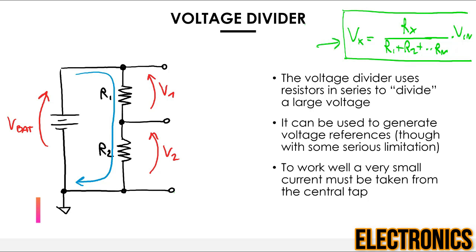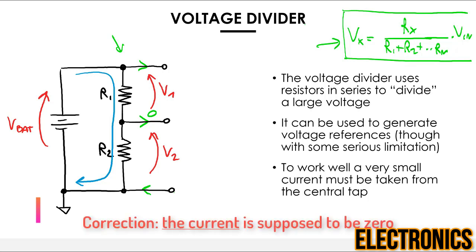I want to revisit an important unspoken assumption in the voltage divider equation: r1 and r2 must be in series with each other, crossed by the same current. This means the current taken by the central terminal must be zero. The terminals at the very top and bottom can carry as much current as they want since they're connected straight to a battery, but if the central terminal current is not zero, the equation is no longer valid.